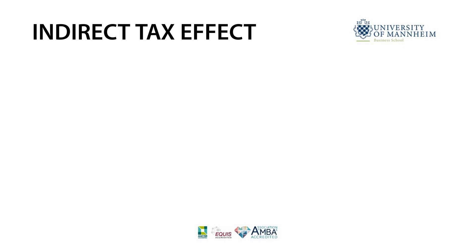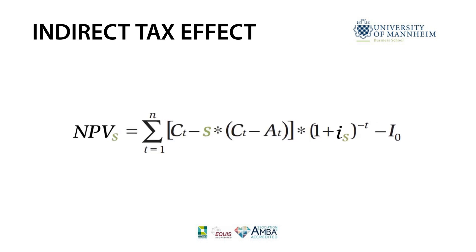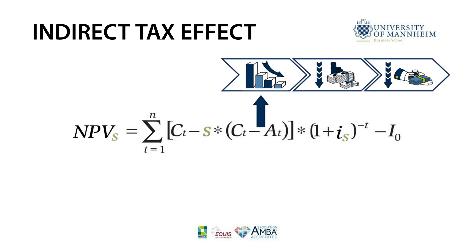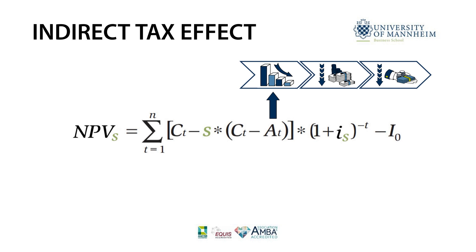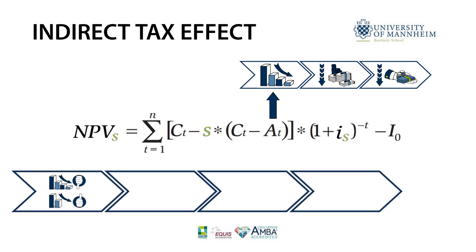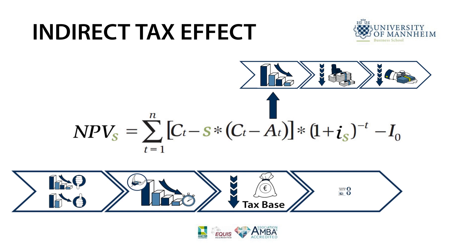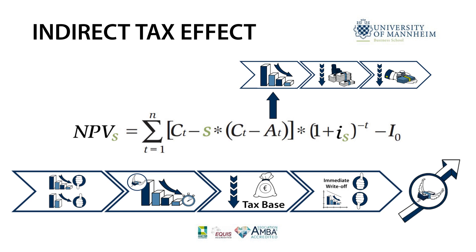In addition to the direct effects of taxes, the applicable tax depreciation method has an indirect effect on the NPV after taxes. Tax depreciation decreases the cash flow and, thus, the amount of taxes payable. In general, a longer depreciation period is less favorable than a shorter one. The earlier the investment costs can be depreciated, the earlier the tax base is reduced. An immediate write-off is therefore more favorable than linear depreciation. A favorable depreciation scheme may even increase the profitability of an investment.